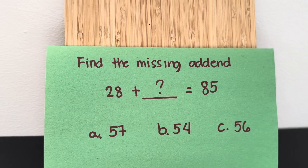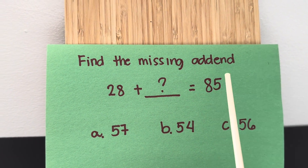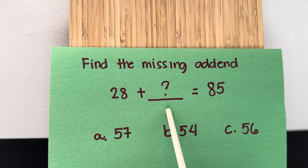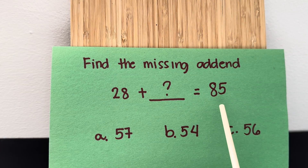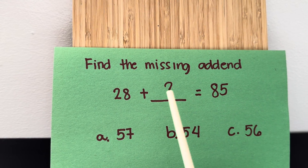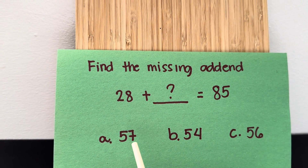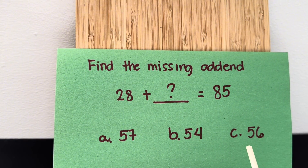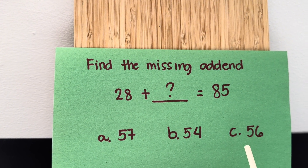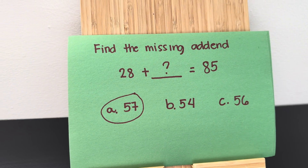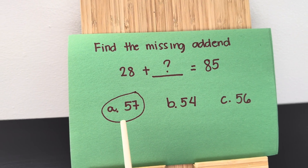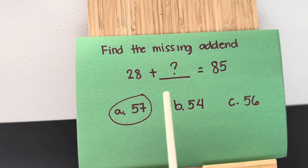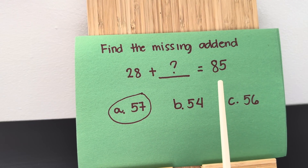Let's try some examples. Find the missing addend. 28 plus blank is equals to 85. Is it letter A, 57? Letter B, 54? Or letter C, 56? And the correct answer is 57. 28 plus 57 is equals to 85.